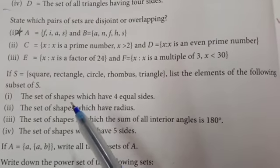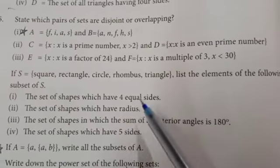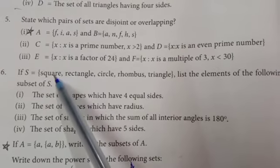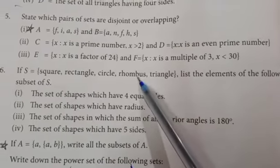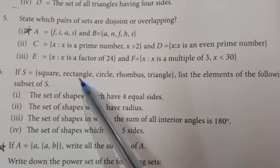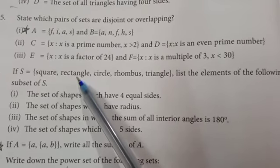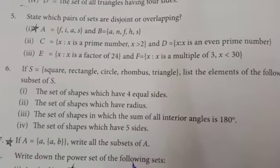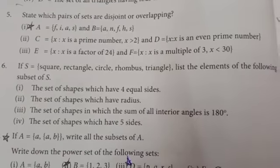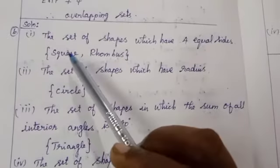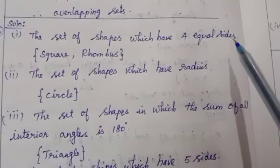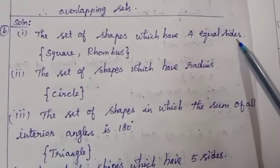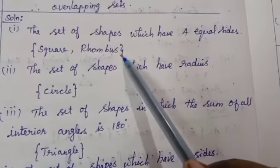Is that correct, students? No — they are asking for equal sides. Square has all sides equal. Rhombus also has all sides equal. Rectangle has only opposite sides equal. So the set of shapes with 4 equal sides is {square, rhombus}.